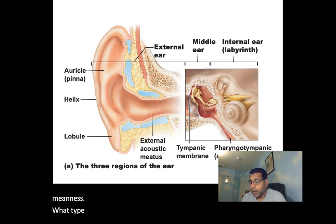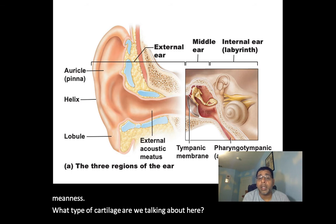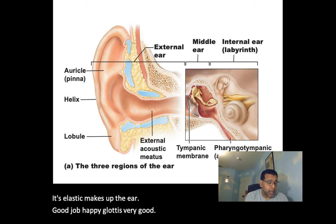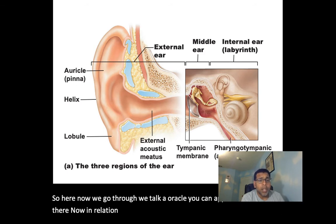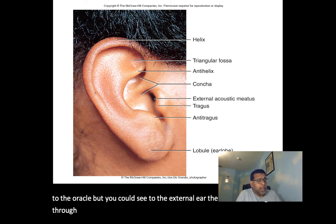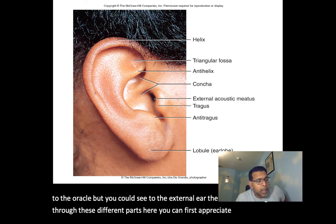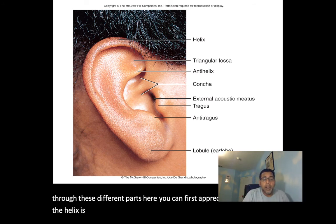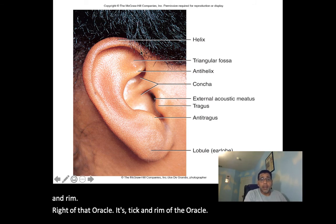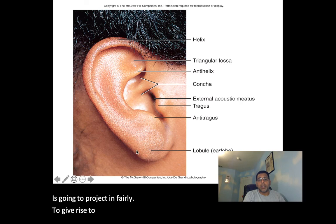The cartilage of the auricle is elastic cartilage — elastic makes up the ear and also the epiglottis. The helix is the thickened rim of the auricle, which projects inferiorly to give rise to the lobule — the earlobe — a fleshy dangling structure made of adipose and connective tissue supporting the epithelial tissue on top.